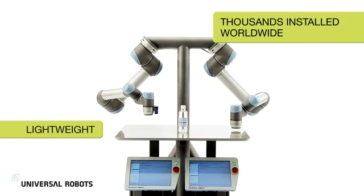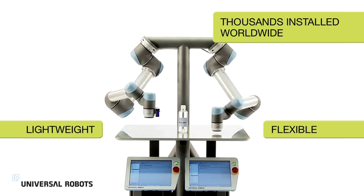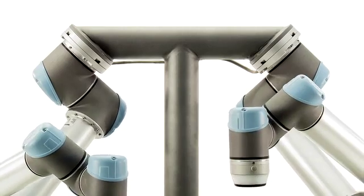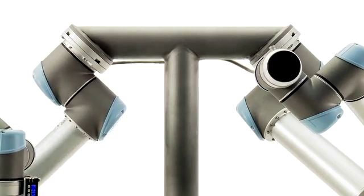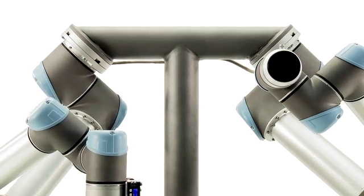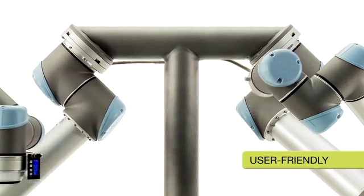Universal Robots has reinvented industrial robotics with lightweight, flexible robot arms. Tasks previously thought impossible to automate due to cost and complexity are now achievable with the user-friendly robots.